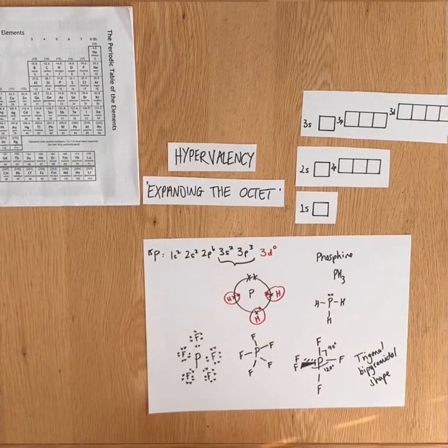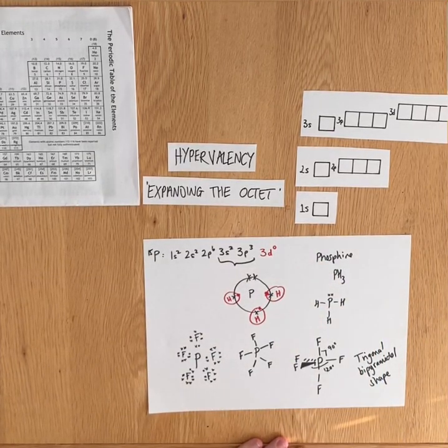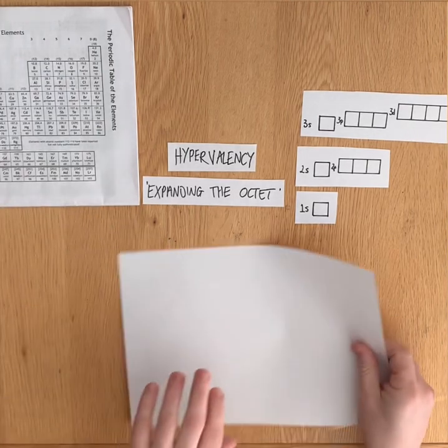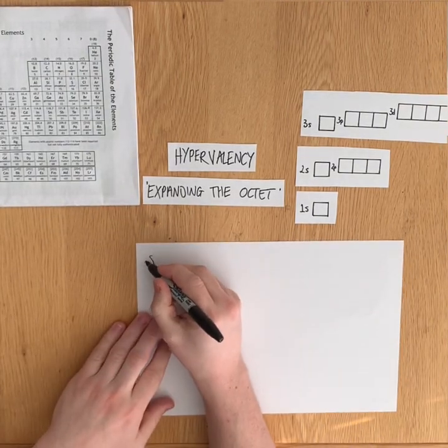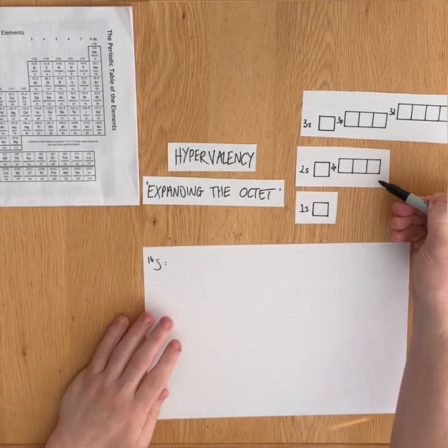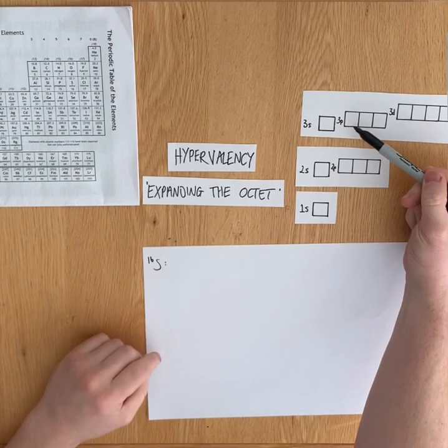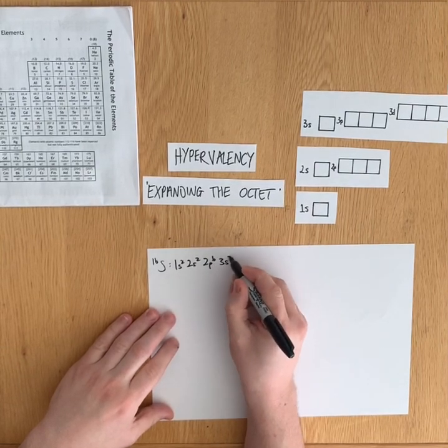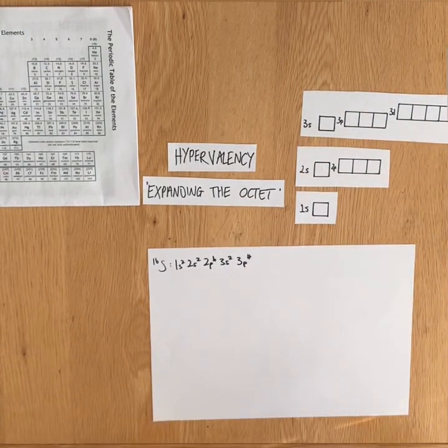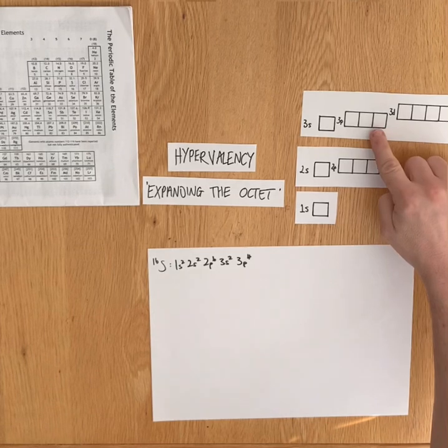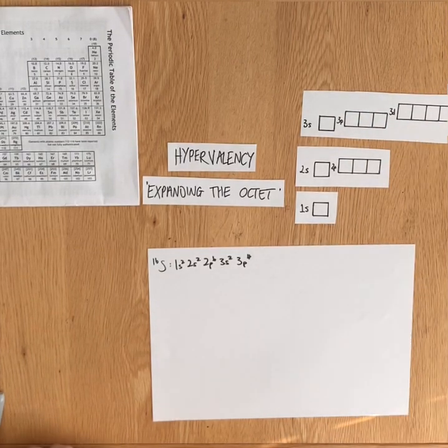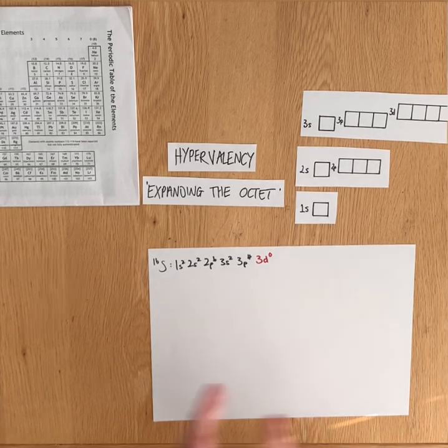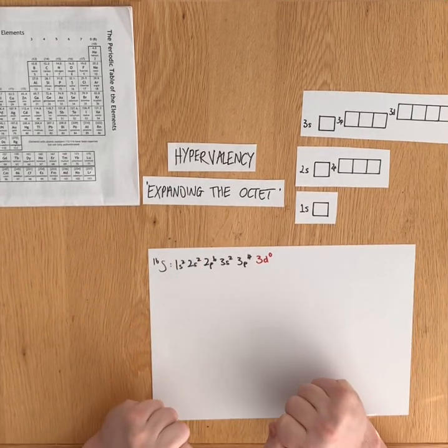Let's try another example, another example which links to shapes quite nicely as well: SF₆. So sulfur has 16 electrons: 1s² 2s² 2p⁶ 3s² 3p⁴. So it's got one more electron. It's got two singly occupied p orbitals, one fully occupied. But remember, it also has an empty 3d subshell. Therefore I can expand the octet here because I don't just have eight potential vacancies for electrons; I've got 18.